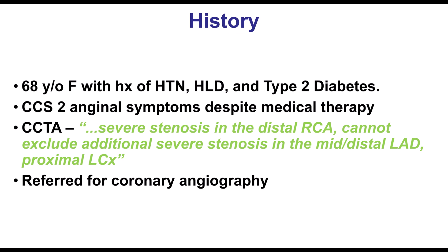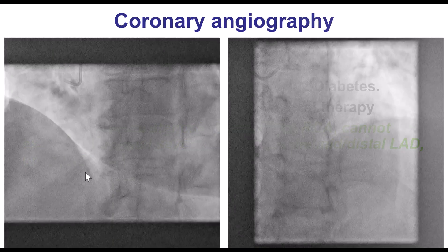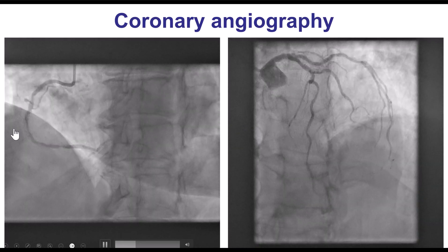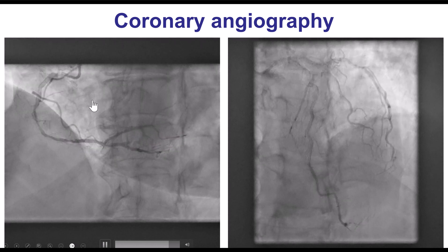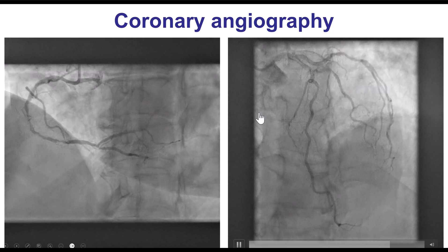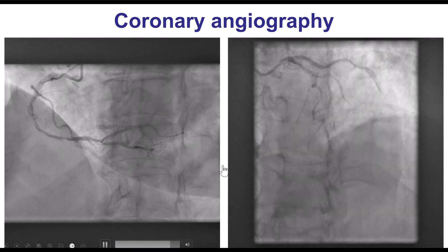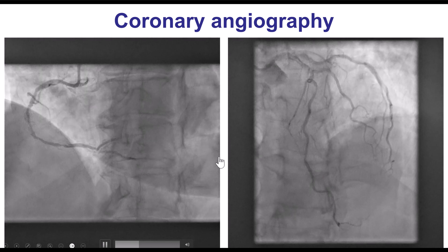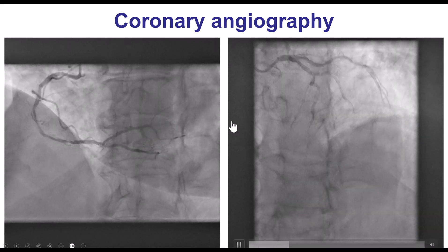The patient was a woman with a history of hypertension, hyperlipidemia, and diabetes who developed angina and had a coronary CT that showed a severe lesion in the distal right coronary artery with indeterminate lesions in the LAD and the circumflex. She was sent for coronary angiography that confirmed severe disease in the distal and mid-right coronary artery, a significant lesion in the mid-LAD, and some diffuse disease in the circumflex. The plan was to start by treating the right coronary artery followed by the LAD.